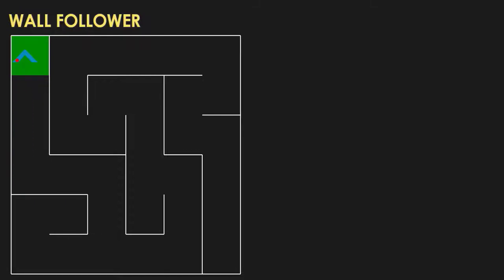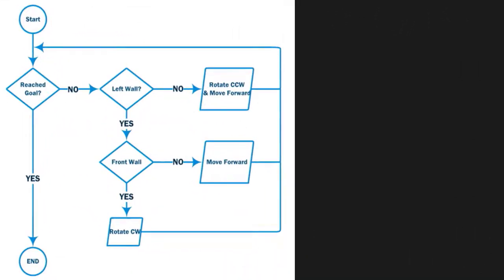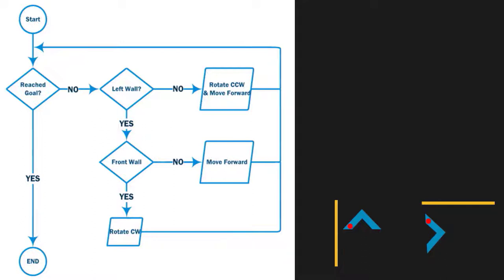Let's understand the logic of this algorithm and then we will implement it in Python. To follow the left wall, we need to consider different possibilities. Here is the flowchart of the algorithm that covers all possibilities. The first possibility is the case when there is a wall on the left side of the agent and the front side is open. In such case, you need to move forward. This is also the same case — wall on the left side and the forward direction is open — again we need to move forward.